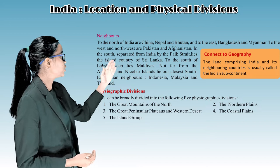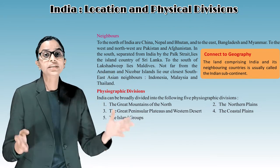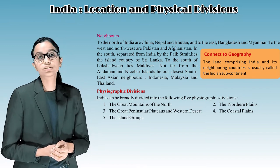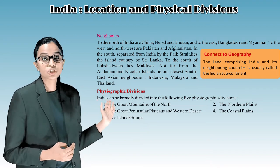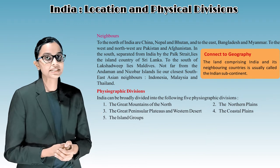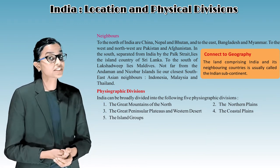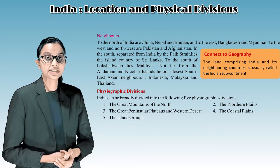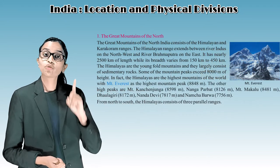India can be broadly divided into the following five physiographic divisions: first, the great mountains of the north; second, the northern plains; third, the great peninsular plateau and western desert; fourth, the coastal plains; and fifth, the island groups.